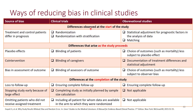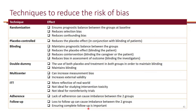Here are ways to reduce the risk of bias in clinical trials. At the start of the study, we do randomization with stratification to ensure similar groups. As the study proceeds, we use blinding of the patient, caregivers, and assessors of outcomes. At completion, we ensure complete follow-up, complete the study as initially planned by sample size calculation, and include all patients whose data are available in the arm to which they were randomized.